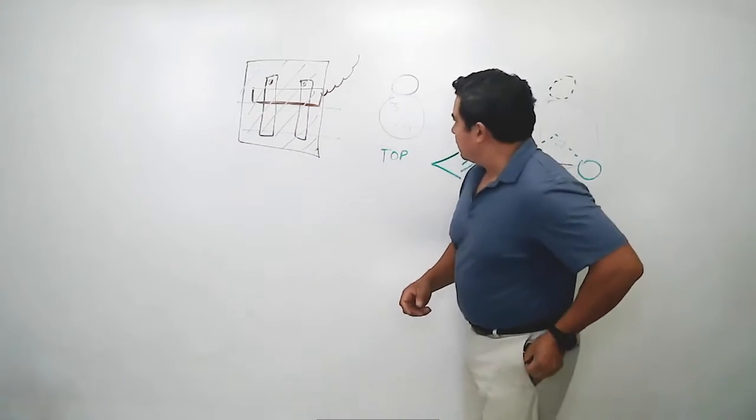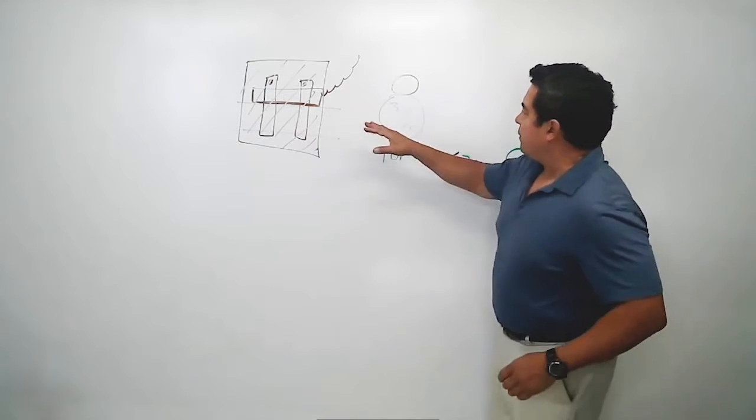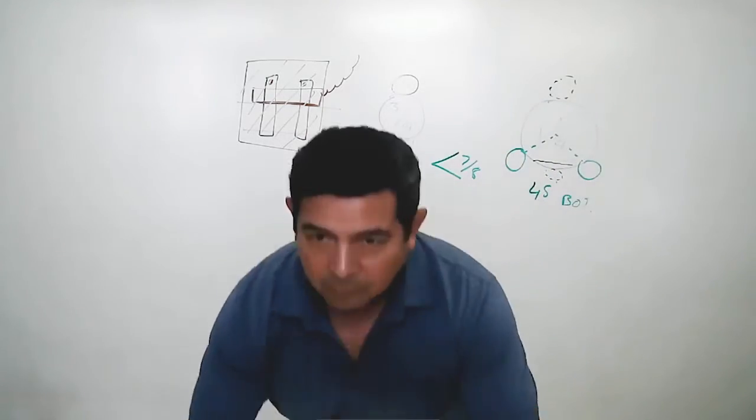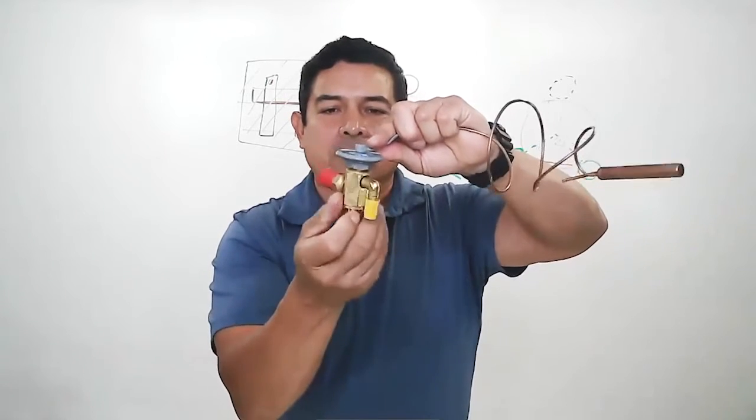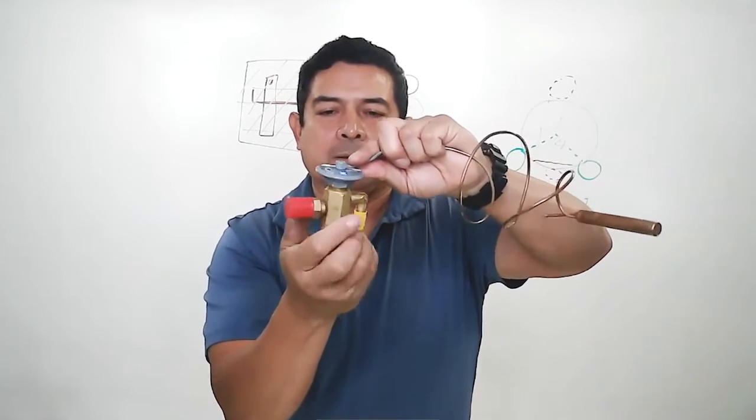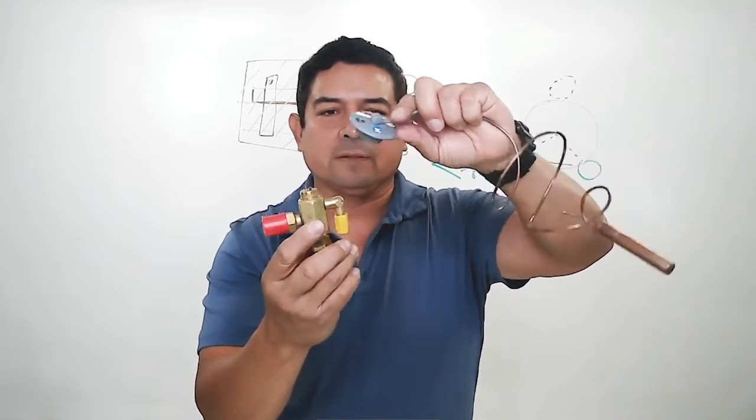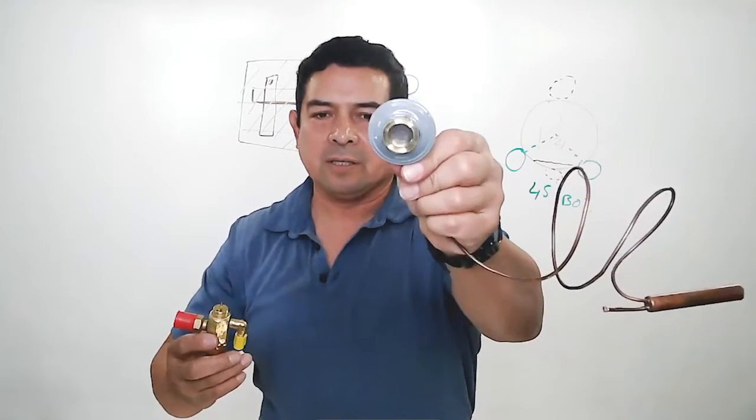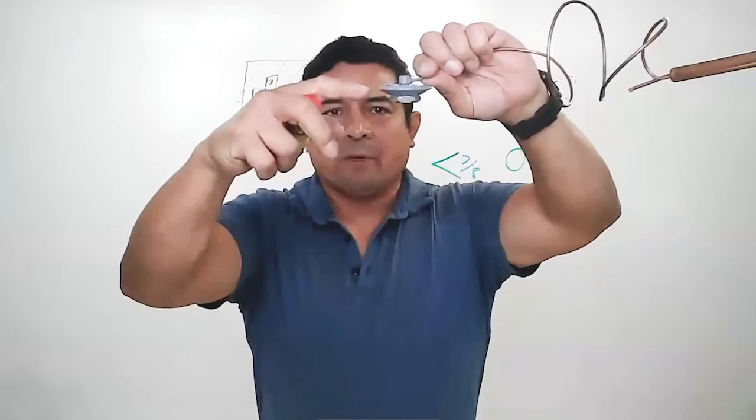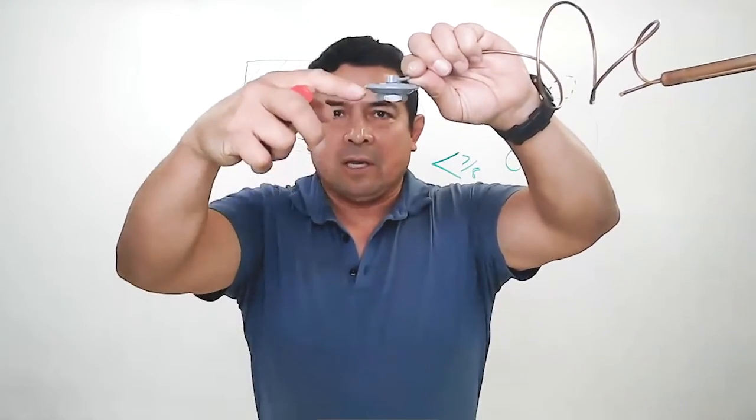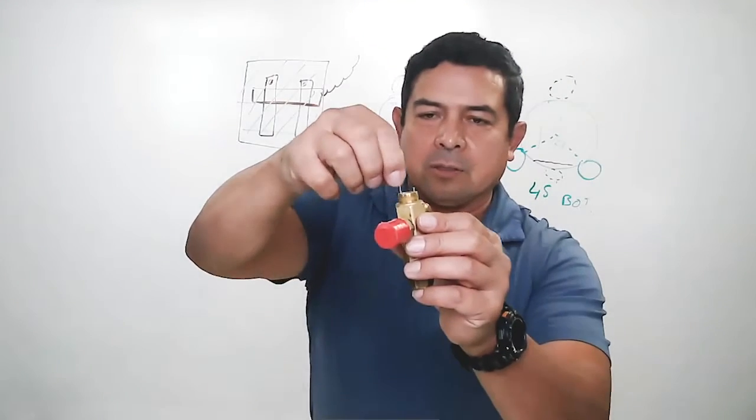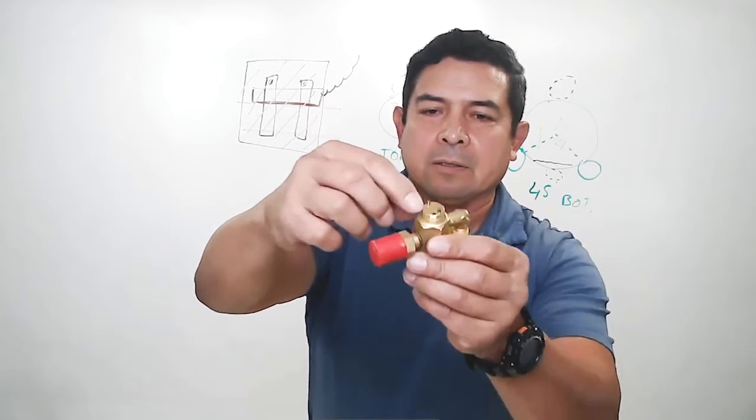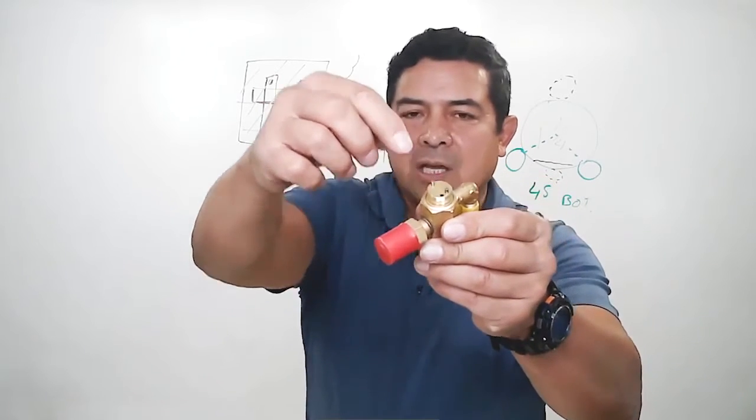So now we have the sensing bulb that we talked about, the power head right here. So this power head, it can come off. Once we take this off inside, we can see the diaphragm that's in there. When this senses temperature, the diaphragm is going to expand down and push down. Once it pushes down, it's going to take these pins that are here and push them down.